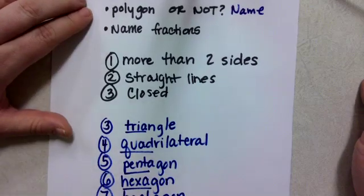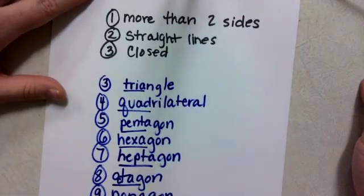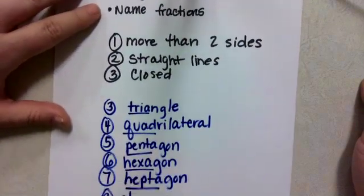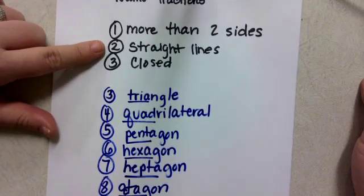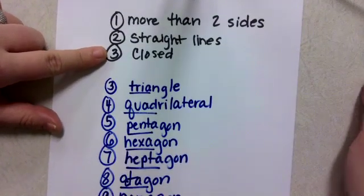So for polygon or not, remind students what it means for a shape to be a polygon. More than two sides, straight lines, and it needs to be closed.